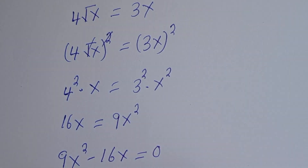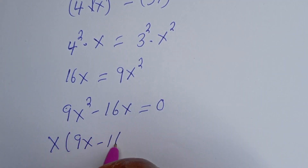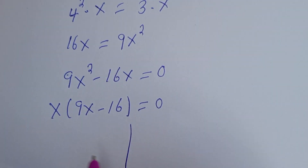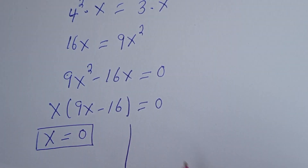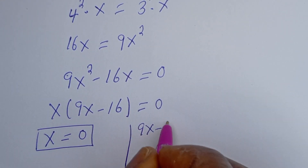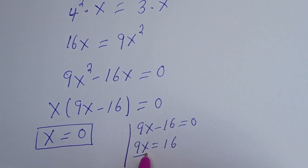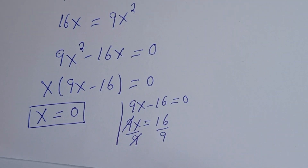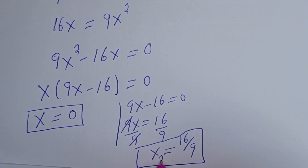So we have 9s squared minus 16s is equal to 0. Factoring, s is common: s times (9s minus 16) equals 0. There are two cases. The first case is s is equal to 0. The second case is 9s minus 16 equals 0, so 9s equals 16, giving s equals 16 over 9.